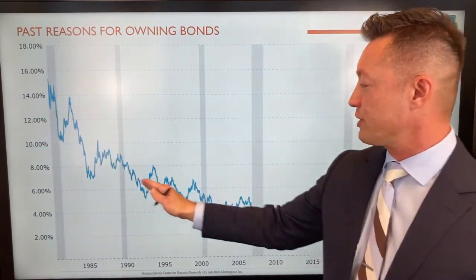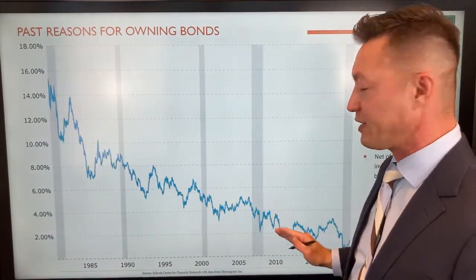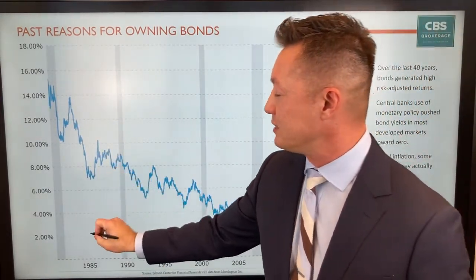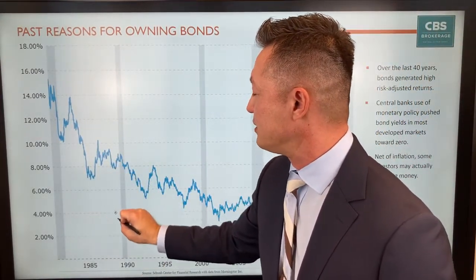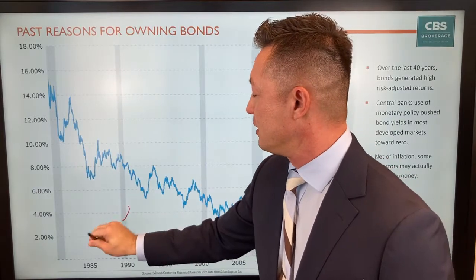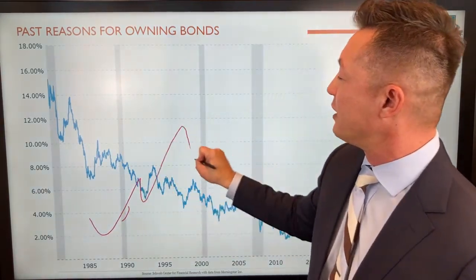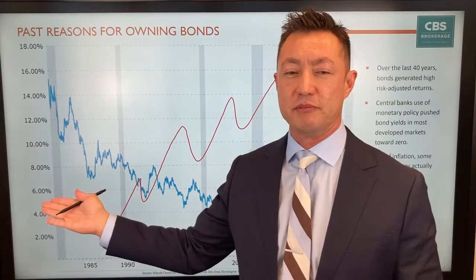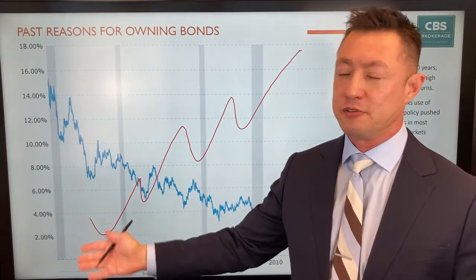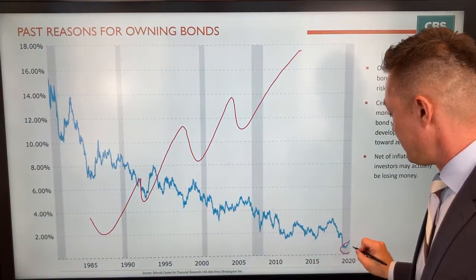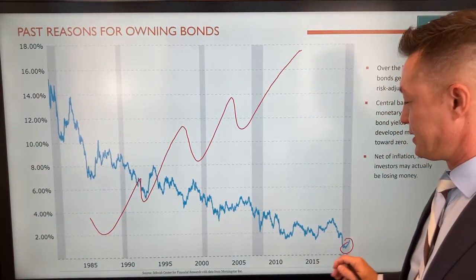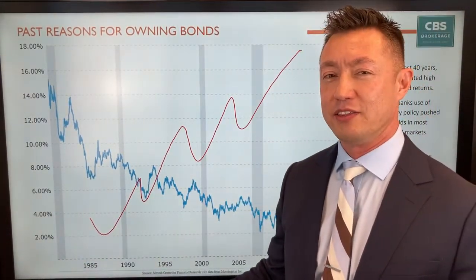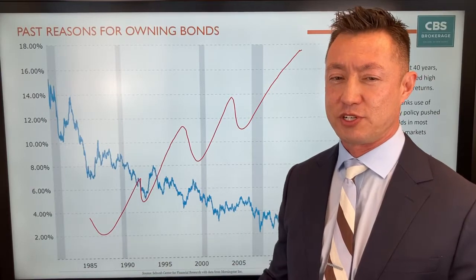The last 30 years, interest rates have declined pretty steadily as you can see on this chart. What that meant over time is that with the drop in yields, the base amount of bonds increased in value. So we had a bull market in bonds the last 30 years, but today, with rates at approximately 1.6% on a 10-year treasury, there's not much more downside and the correlation may change in the future.